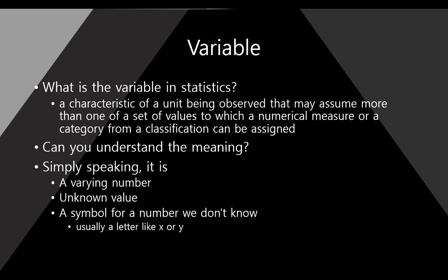Okay, we will go on the variable. So, what is the variable in statistics? If we check any textbook, maybe the definition is like this: a characteristic of a unit being observed that may assume more than one of a set of values to which a numerical measure or a category from a classification can be assigned. Can you understand the meaning? It's very difficult.